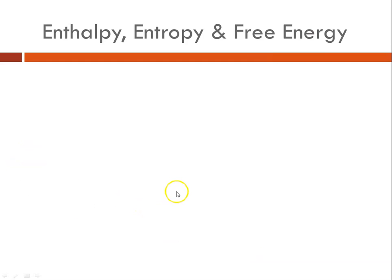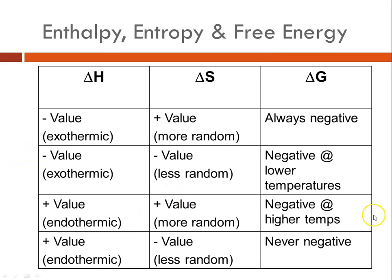So entropy, enthalpy, and free energy. Here's a chart. So this is telling you about the value of the delta H, the delta S, and the delta G. So where delta H is negative, which means it's exothermic, and delta S is positive, means randomness is increasing, delta G will always result in a negative number from that equation, and again, that means it can be spontaneous.